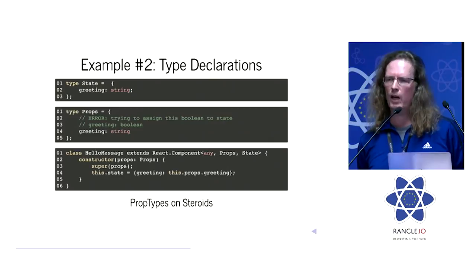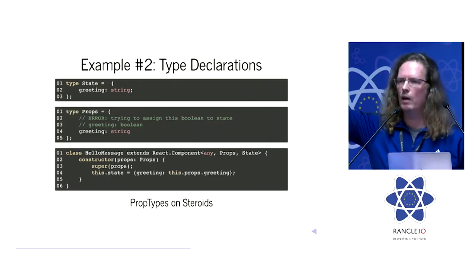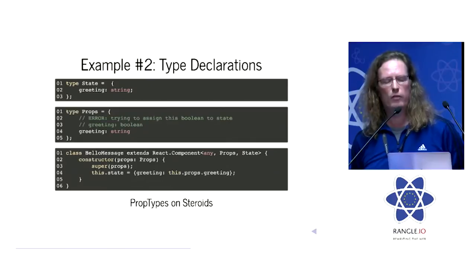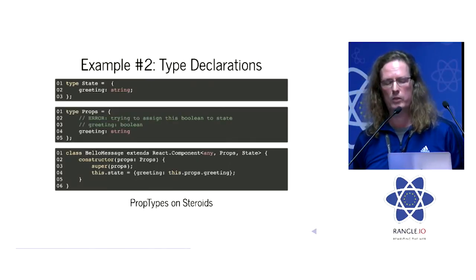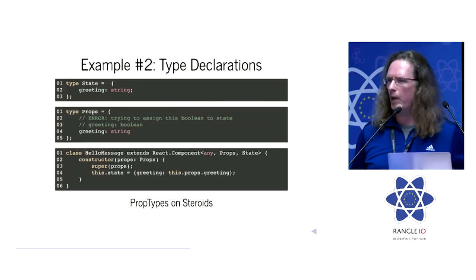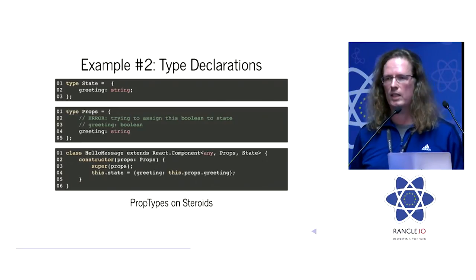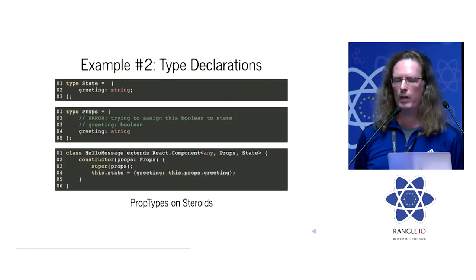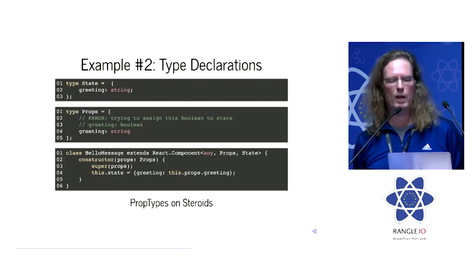This is a little bit like prop types and stereotypes. Who knows what prop types are? Who does not know what prop types are? Oh, you don't know. Prop types is something like a dynamic thing for defining how properties, like props, are supposed to look like. This is like better, from my perspective, because it's at compile time, development time. There also is a Babel plugin that can generate prop types from that type information.